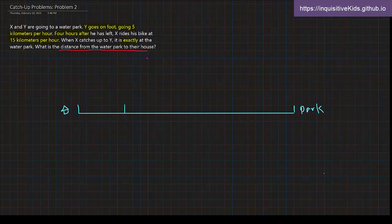So if it's four hours and he walks five kilometers per hour, then we just do a multiplication. Four times five equals 20, so that would be 20 kilometers right there. And that's where Y is.